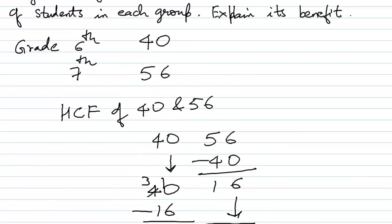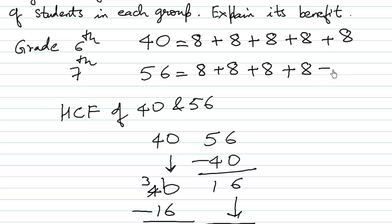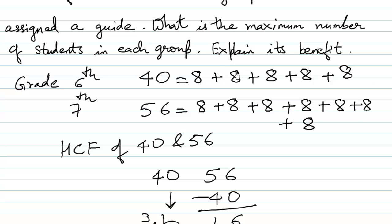So the answer is we divide the students into groups of 8. For the 40 students in 6th grade: 8 × 5 = 40, giving 5 groups. For the 56 students in 7th grade: 8 × 7 = 56, giving 7 groups. That is 12 groups in total, and each group has an equal number of 8 students, with a guide assigned to each group.